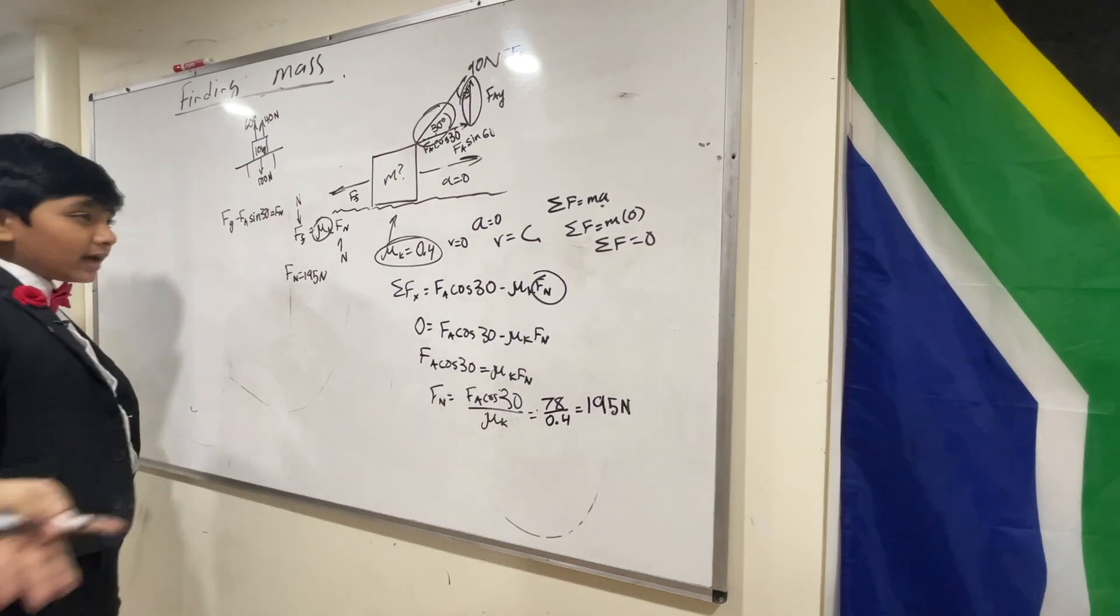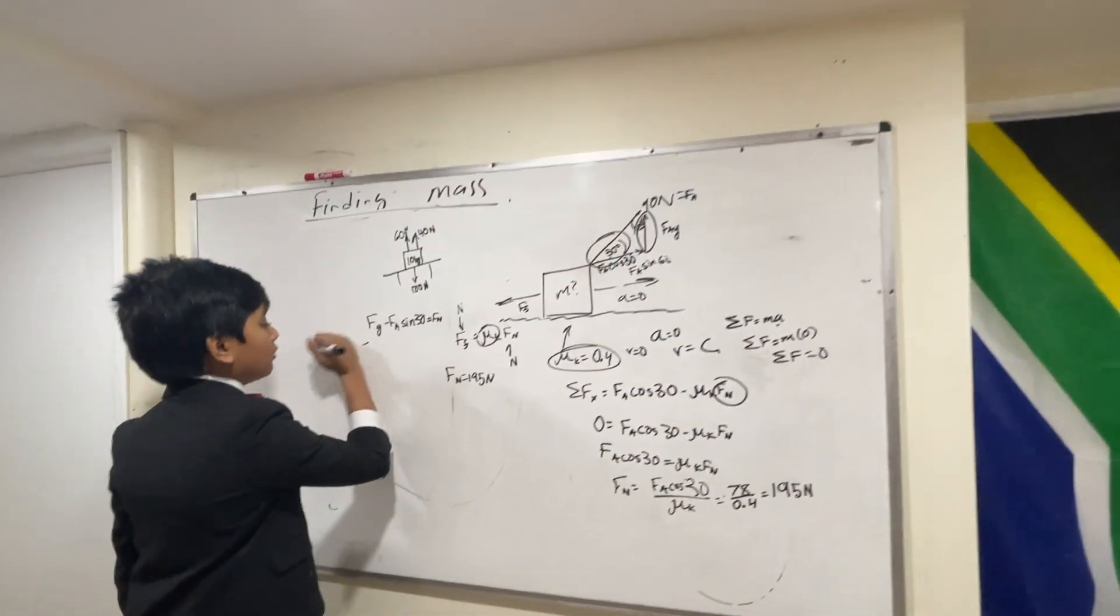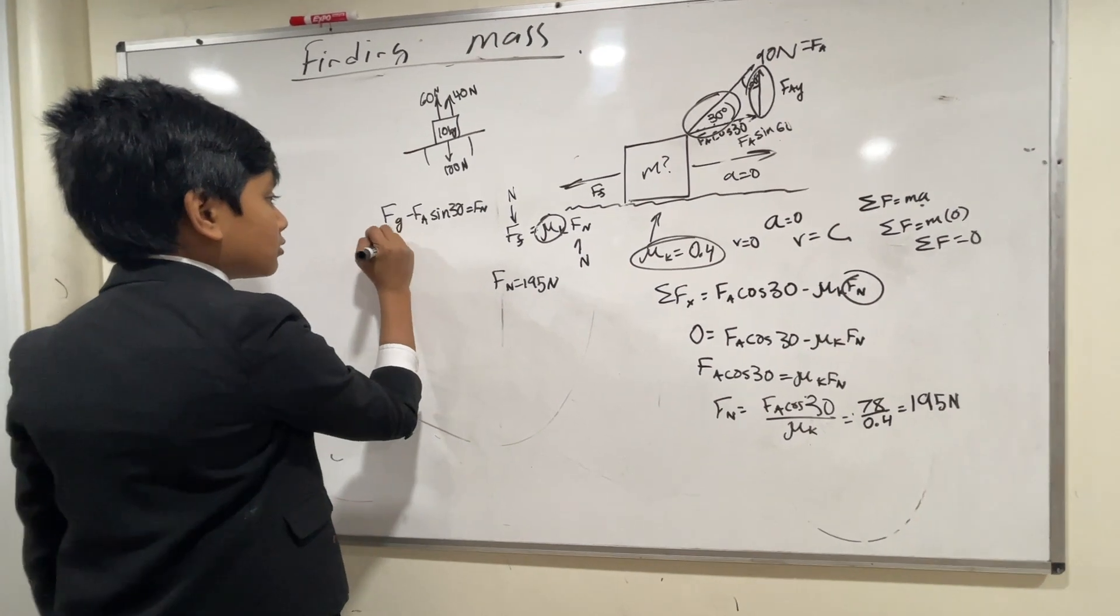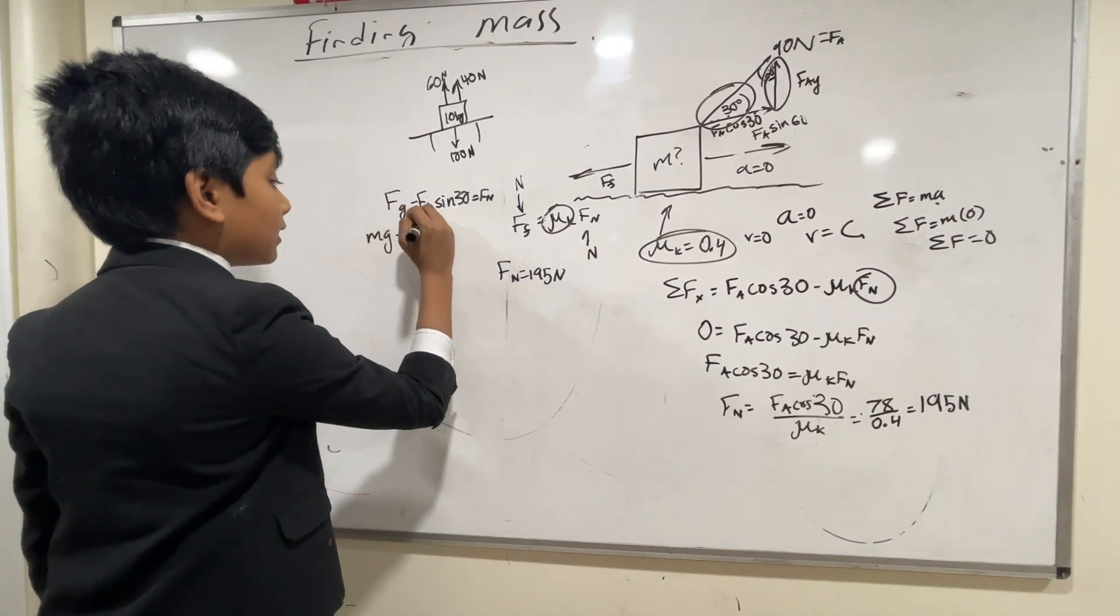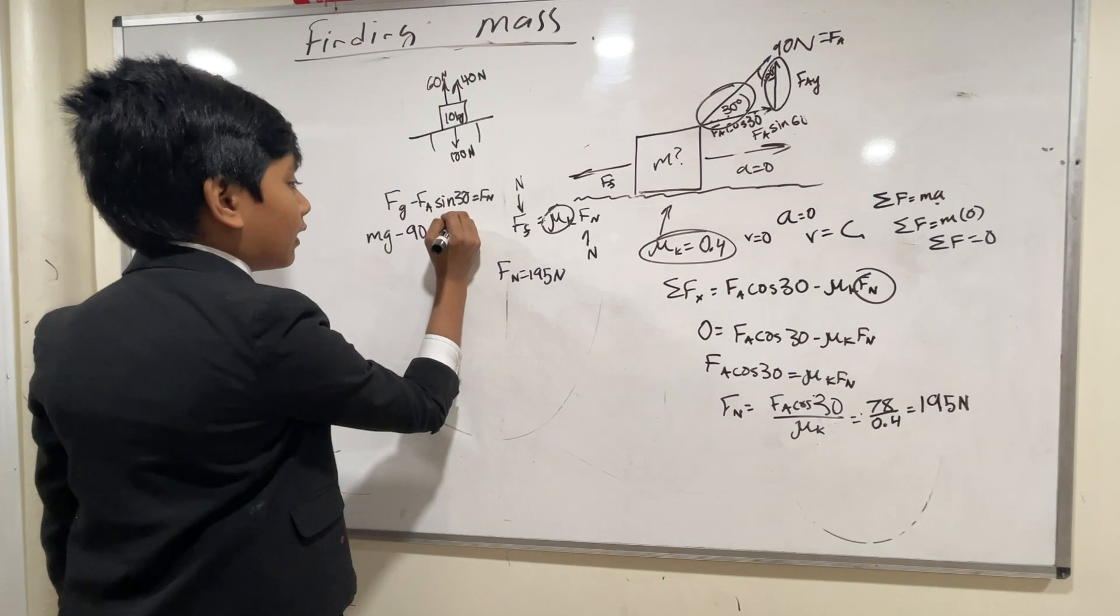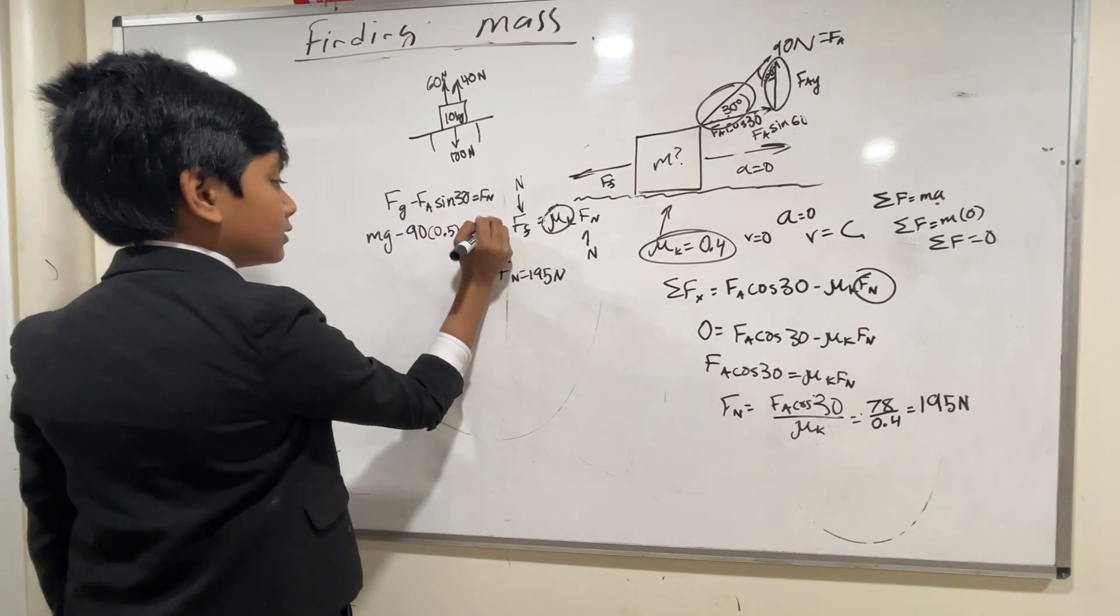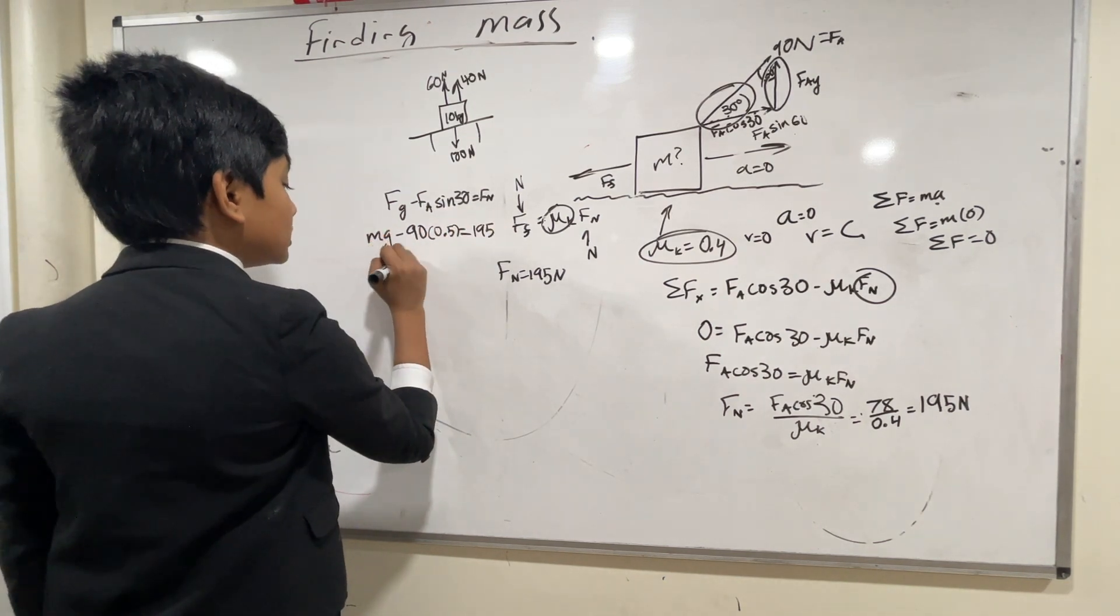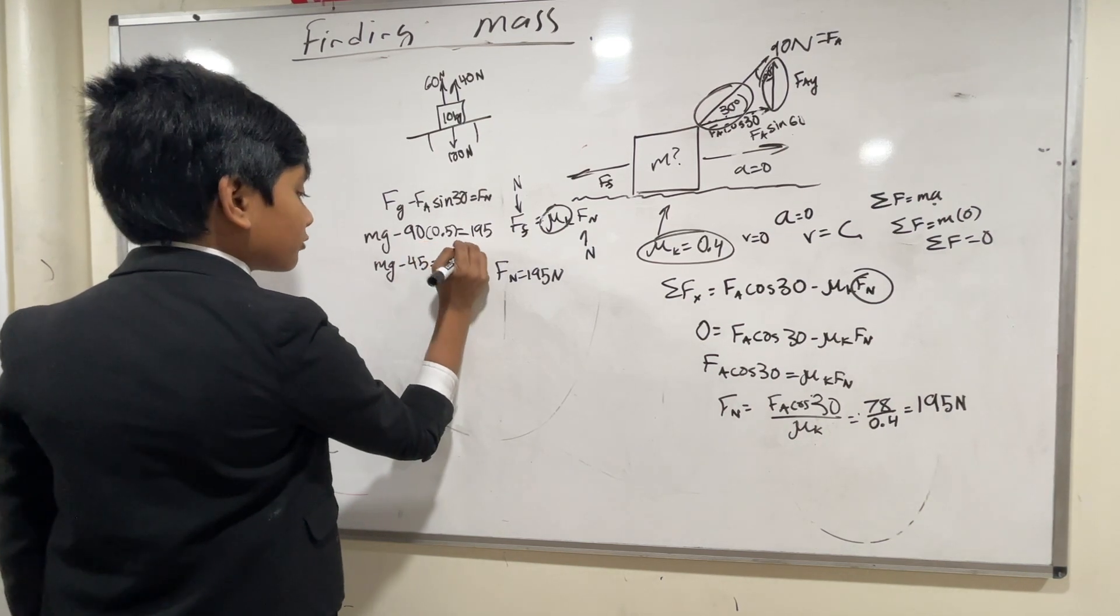And this helps us because now we can figure out fg, which helps us figure out mg. So we get mg minus f a, 90, sine 30, is 0.5, equal to fn, is 195. So we get mg minus 45 is 195.